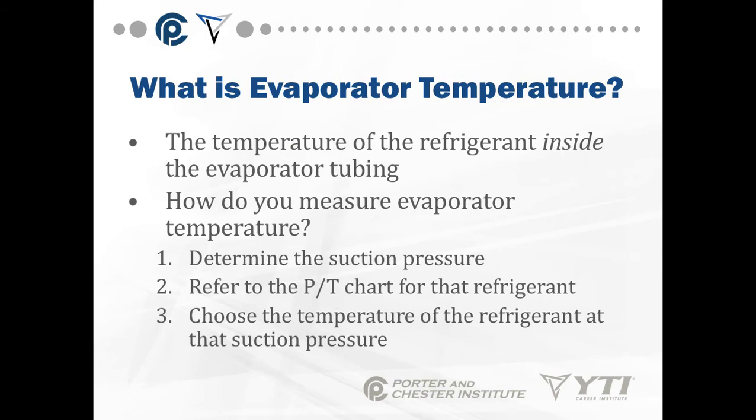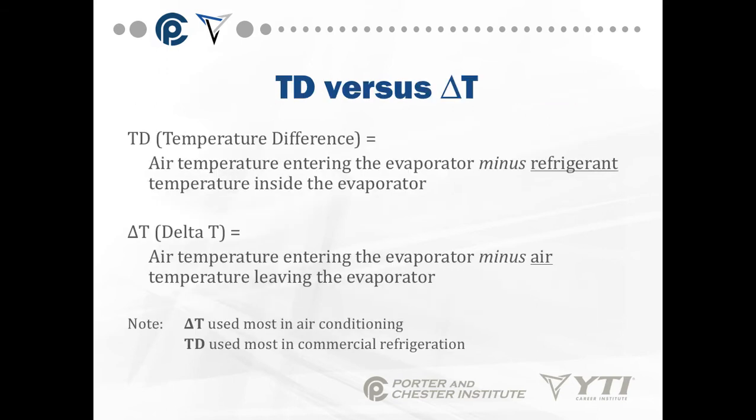The evaporator temperature is the temperature of the refrigerant inside the tubing. To measure evaporator temperature, determine the suction pressure and refer to your pressure-temperature chart for that refrigerant. Choose the temperature of the refrigerant at that suction pressure — it's basically a conversion, changing your suction pressure (your low-side pressure) to temperature using the appropriate chart.